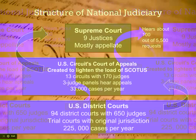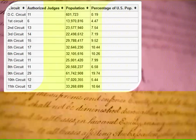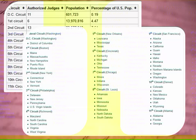This entire diagram should be in your notes so you understand how cases move up. Cases start at the bottom with original jurisdiction, where a case is heard for the first time, and move up through appellate jurisdiction, where cases are reviewed from a lower court. Here is a map of the US District Courts and Courts of Appeals. For example, the Fourth Circuit Court is in Richmond and covers Maryland, North Carolina, South Carolina, Virginia, and West Virginia.